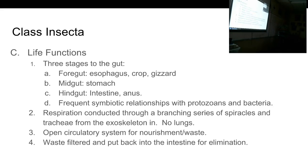Their waste system is interesting. Solid undigested waste is eliminated through the intestine. Cellular metabolic waste from the blood gets filtered out and put back into the intestine as well. So both undigested food material and cellular metabolic waste both come out of the intestine — they only have one opening for waste elimination, and both kinds come out of the same hole.